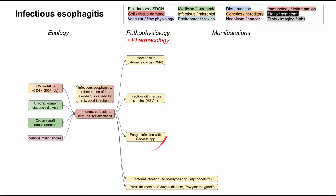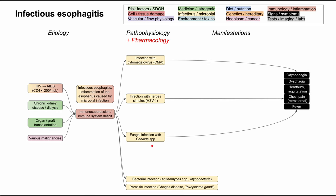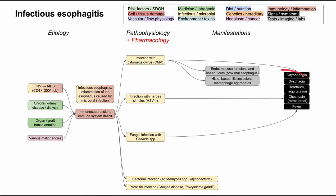We're going to focus on the top three: CMV, herpes, and Candida esophagitis. The manifestations for these three most common causes are all similar. They all have odynophagia and dysphagia. Patients can also have heartburn and regurgitation, chest pain — specifically a retrosternal chest pain right where the esophagus is — and fever. Pain with swallowing and difficulty swallowing are probably the most common symptoms. Because they all present the same way, differentiation comes down to endoscopy and histology, performing an EGD and possibly sending a biopsy to pathology.